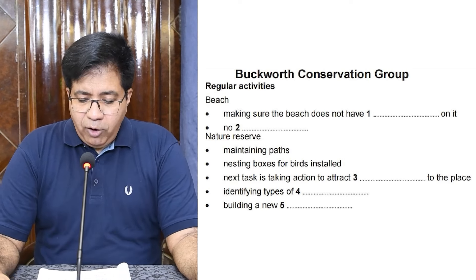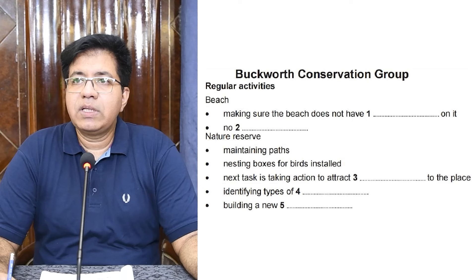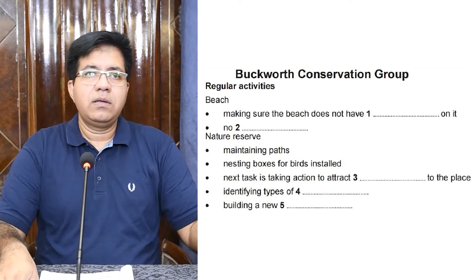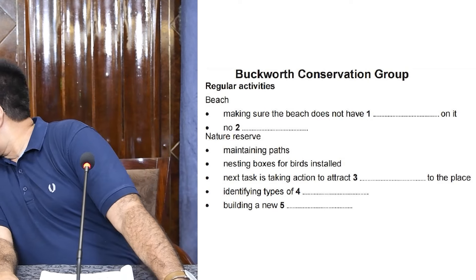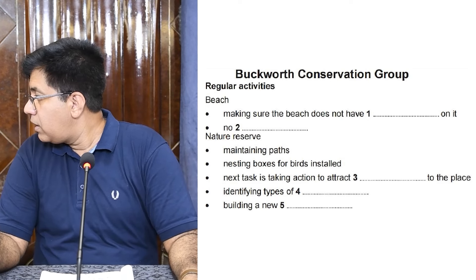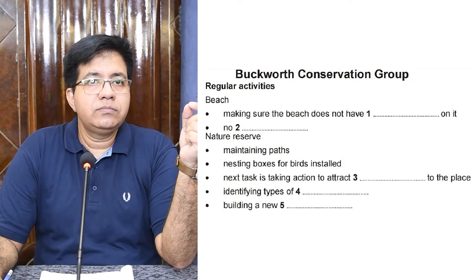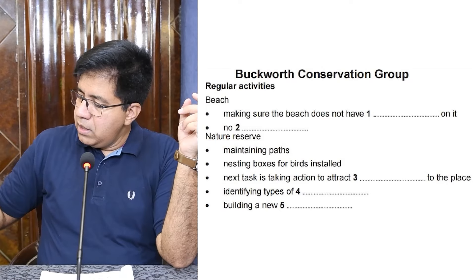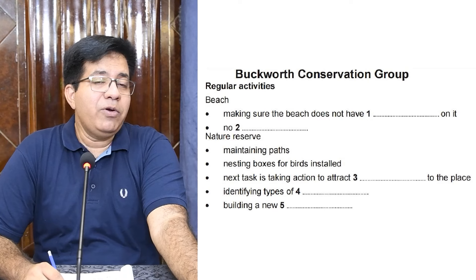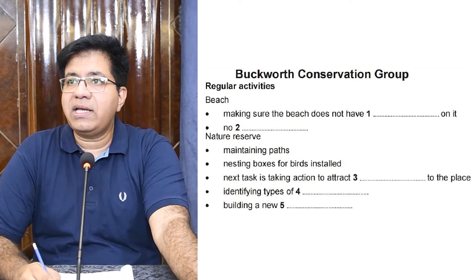Listen and answer Question 1. A woman called Jan phones a man about the local conservation group. She asks about their activities. The man says: 'One of the regular ones is trying to keep the beach free of litter — a few of us spend a couple of hours a month on it.' Litter is spelled L-I-double-T-E-R, and litter means garbage. The correct answer is 'litter.'